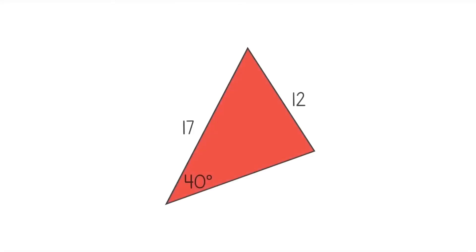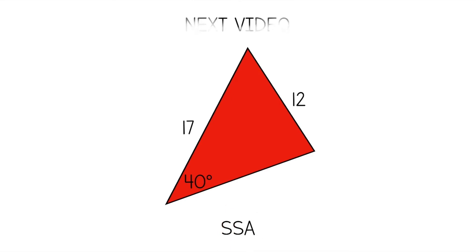If you remember from the beginning of the video, we also saw a triangle that represents a situation called SSA — two sides and an angle that's not between the two sides. Since we have an angle and the side opposite of that angle, we can also use the law of sines to solve it, but it's a little trickier with SSA. We'll talk about that next video.